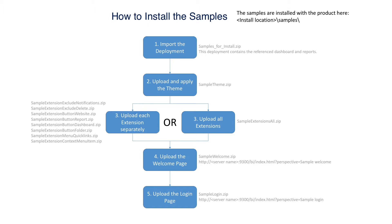They are best installed in the following order: 1. Import the deployment. 2. Upload and apply the theme. 3. Upload each extension separately or upload all the extensions as one. 4. Upload the welcome page. 5. Upload the login page.